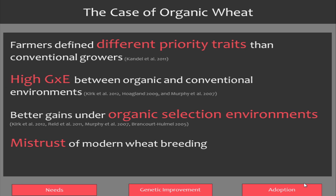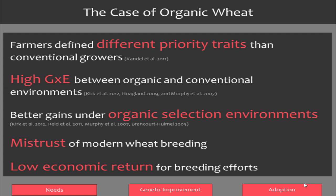There's really low economic return for breeding efforts in organic wheat, so companies aren't interested in taking it on, and organic wheat growers don't have varieties well adapted to their systems — turning to materials that are probably not optimal. There's also high mistrust of modern wheat breeding; since around 2011 there's been considerable supposition that modern wheat is a chronic poison, leading farmers to grow landraces, which is wonderful for diversity but terrible for yields. Participatory breeding can help reestablish trust in breeding programs.